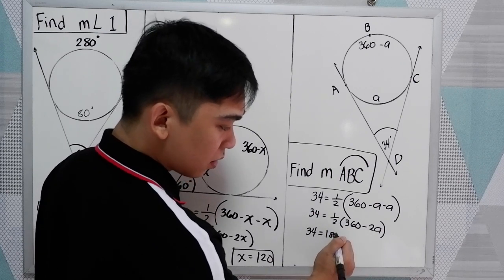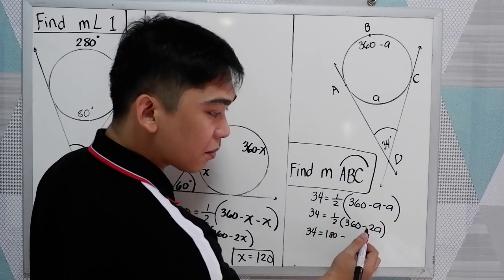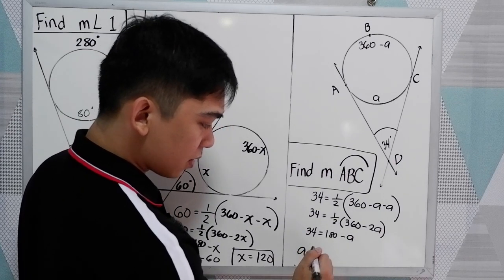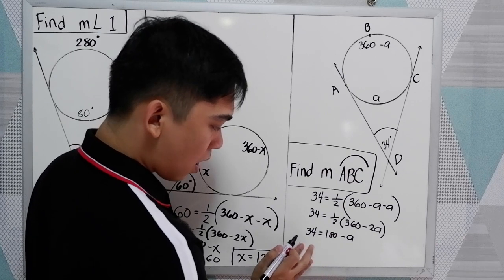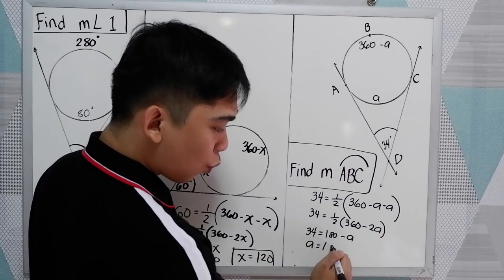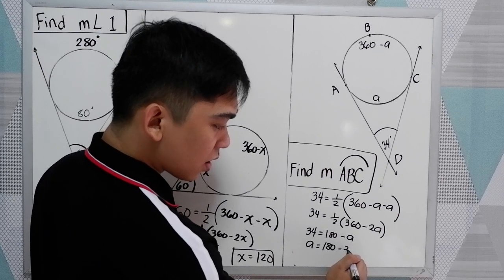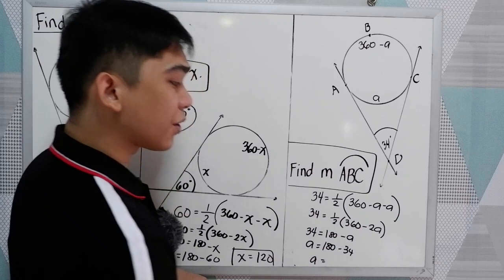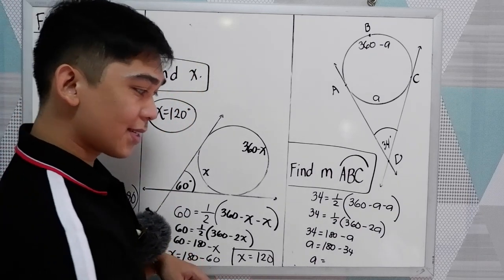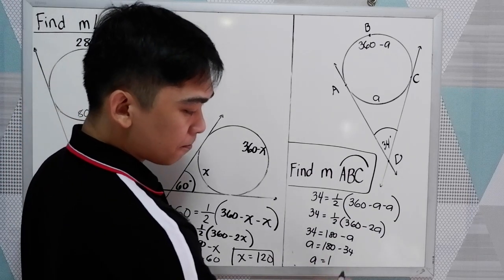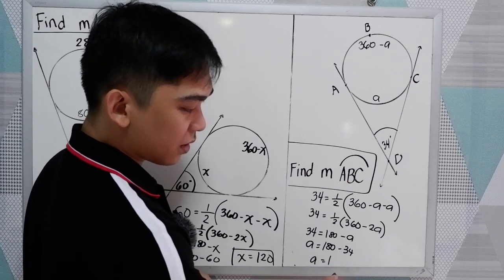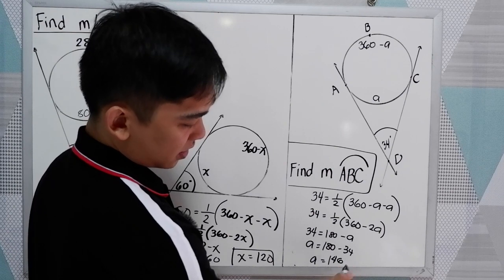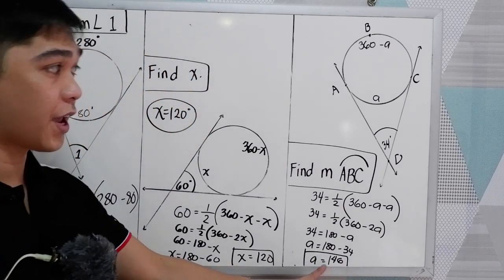So 34 is equal to one-half times 360, so that is 180, minus one-half times 2A, that is A. So we have A. A is equal to 180 minus 34, that is 146. 146 is the value of A.